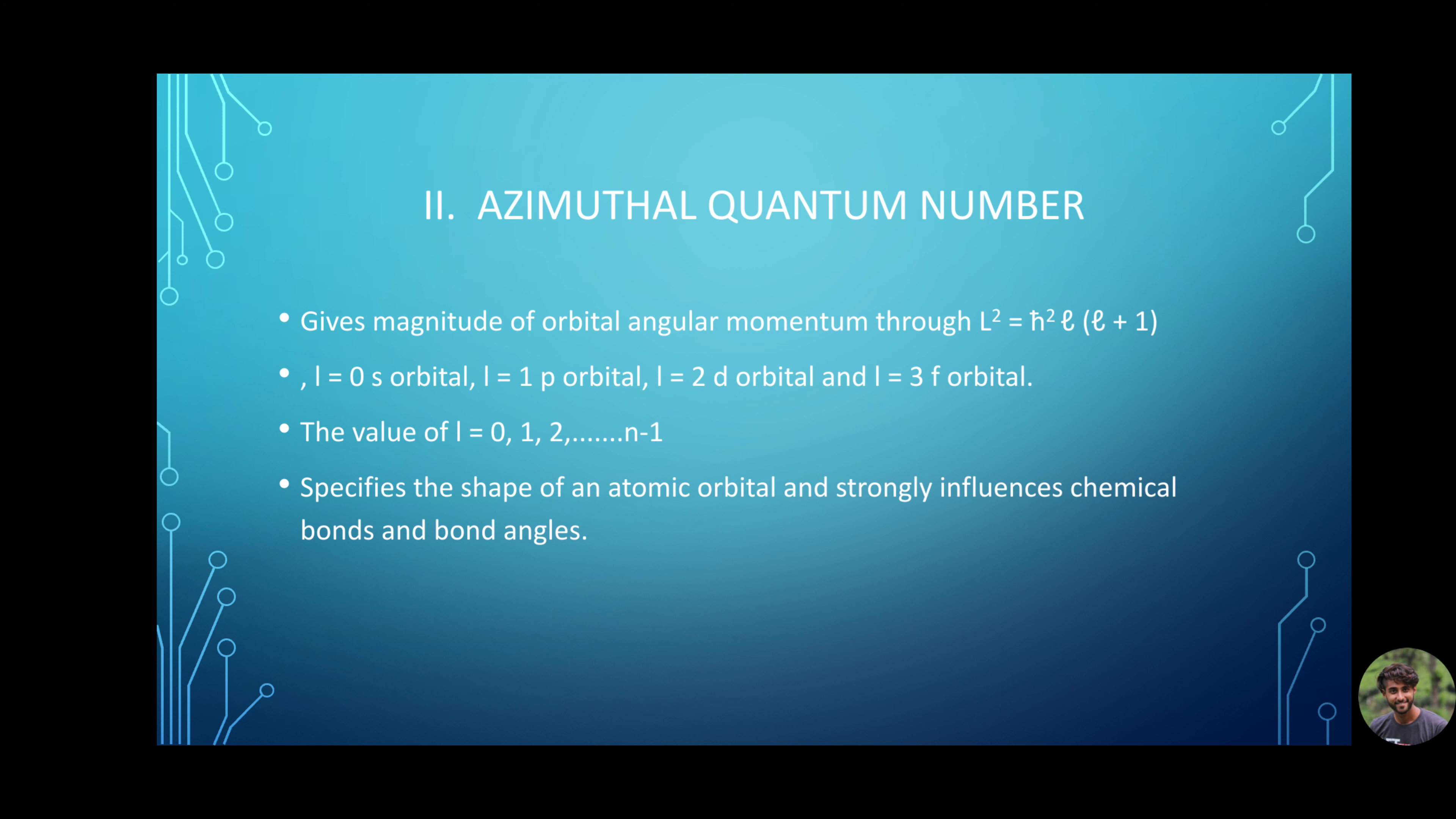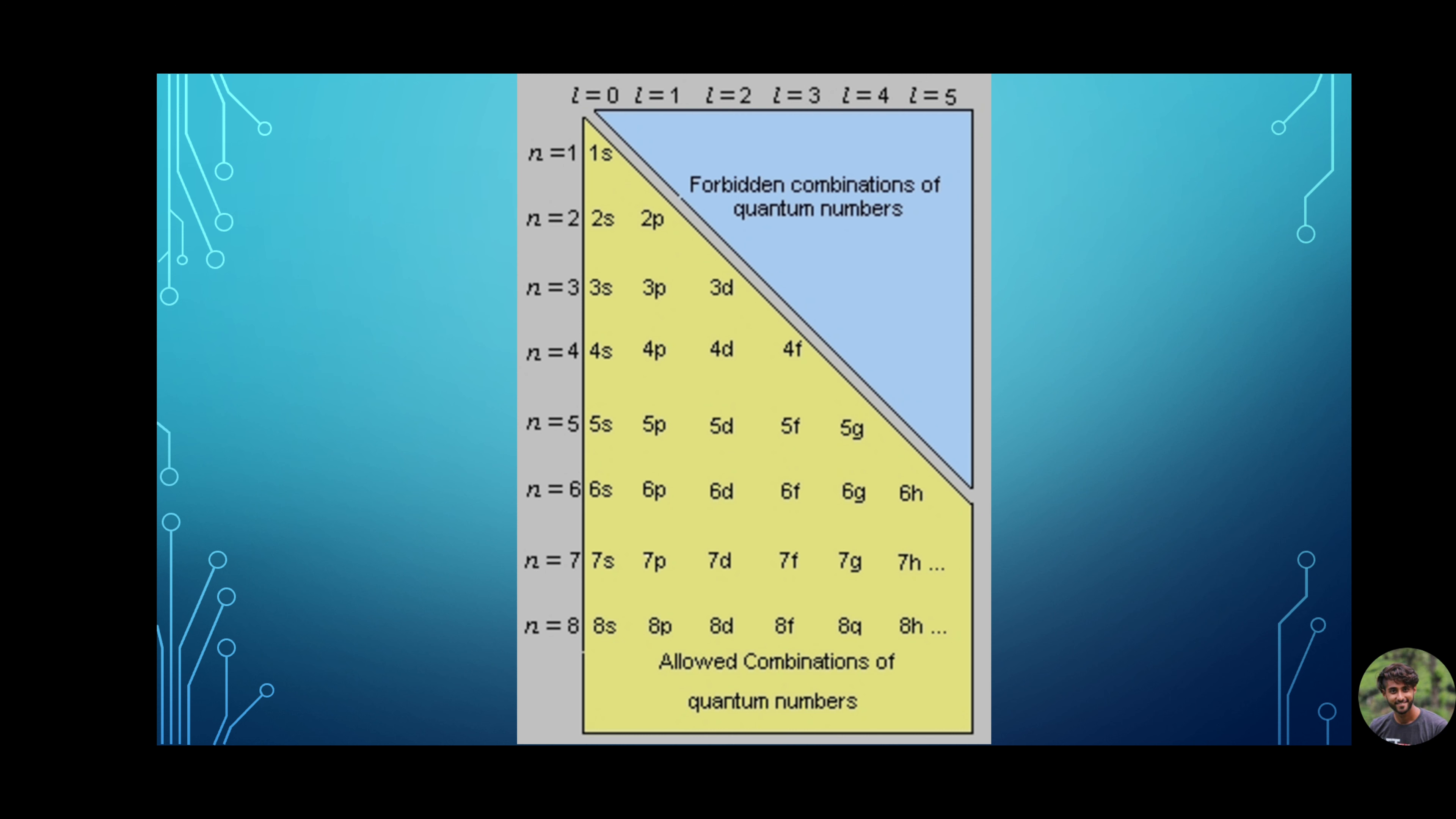This is an important quantum number as it specifies the shape of an atomic orbital and strongly influences chemical bonds and bond angles. For example, quantum number n = 3, l = 0 describes an electron in the s orbital of the third electron shell.